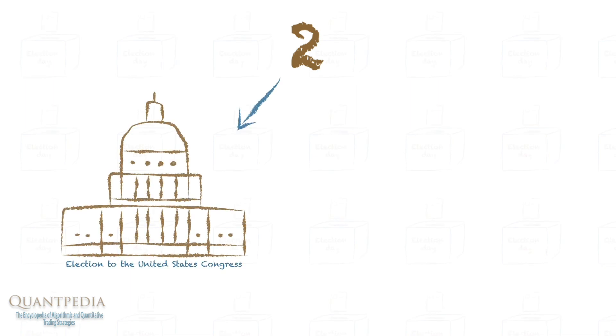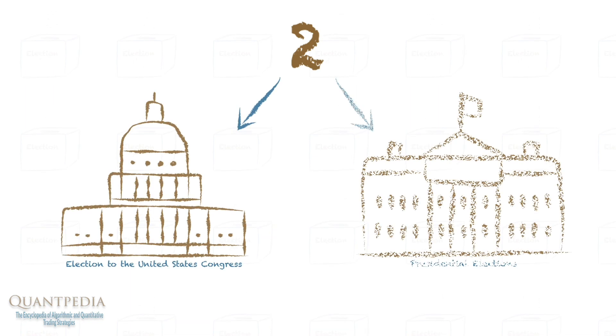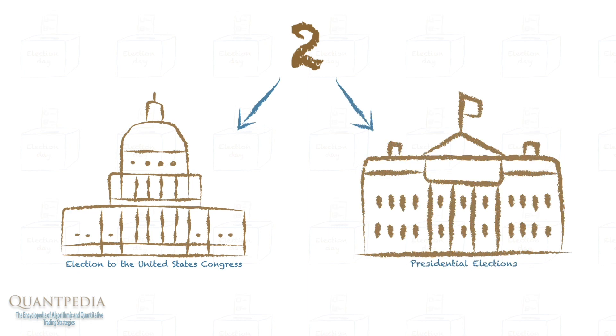In the United States, there are two elections for federal offices: elections for the United States Congress, which are held every second year, and presidential elections, which occur every fourth year. However, we don't distinguish between these two elections, so we analyze them as one same event.